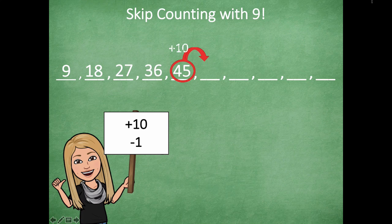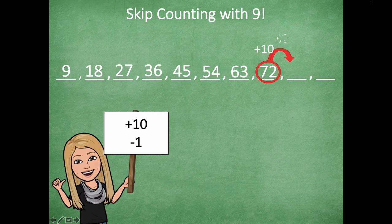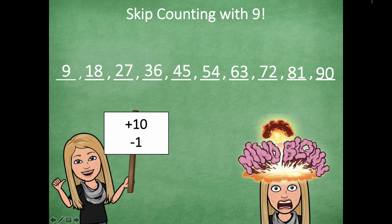Forty-five plus ten is fifty-five, minus one is fifty-four. We're at fifty-four: add ten — sixty-four, minus one — sixty-three. Now you try the next three numbers using the plus ten minus one strategy, write it on your dry erase board, then click play. Sixty-three plus ten is seventy-three, minus one is seventy-two. Seventy-two plus ten is eighty-two, minus one is eighty-one. Eighty-one plus ten is ninety-one, minus one is ninety. Did you get those too?